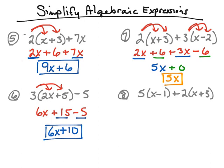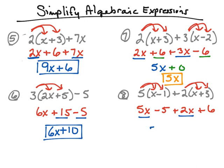Number eight — same as number seven, distributive property twice. Five times x gives five x, and five times negative one gives negative five. Then two times x gives two x, and two times three gives six. Now looking for like terms: five x and two x add together to give seven x. Negative five and positive six add together to give positive one. After simplifying, we end up with seven x plus one.